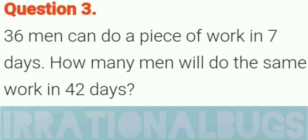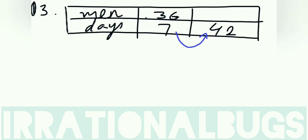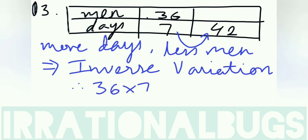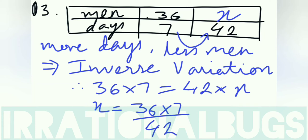Question number 3 is: 36 men can do a piece of work in 7 days. How many men will do the same work in 42 days? We have two quantities - men and days. Now we are seeing that 7 days are going to be 42 days or more days. The more days it takes, the less people can do it. So more days, less men. This is an inverse variation case. That means multiply. 36 into 7 is equals to 42 into x. x is equals to 36 into 7 upon 42, which is 6, our answer.